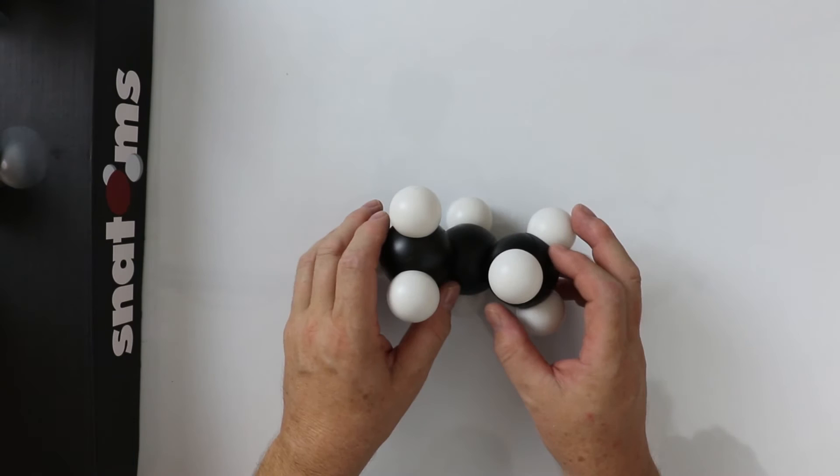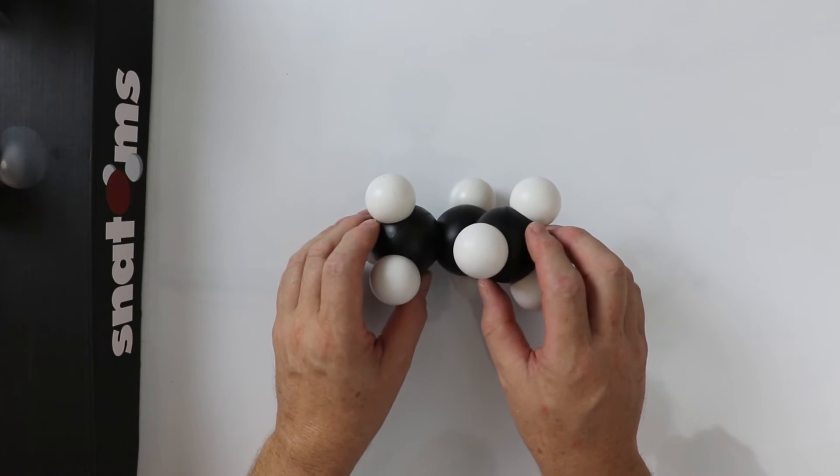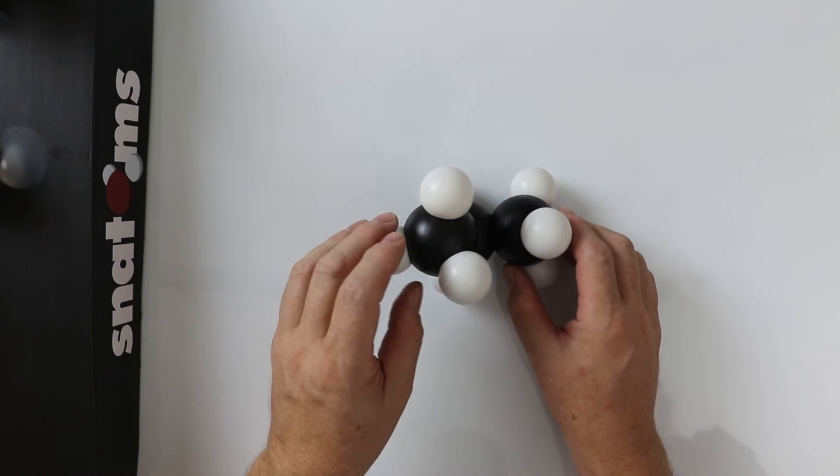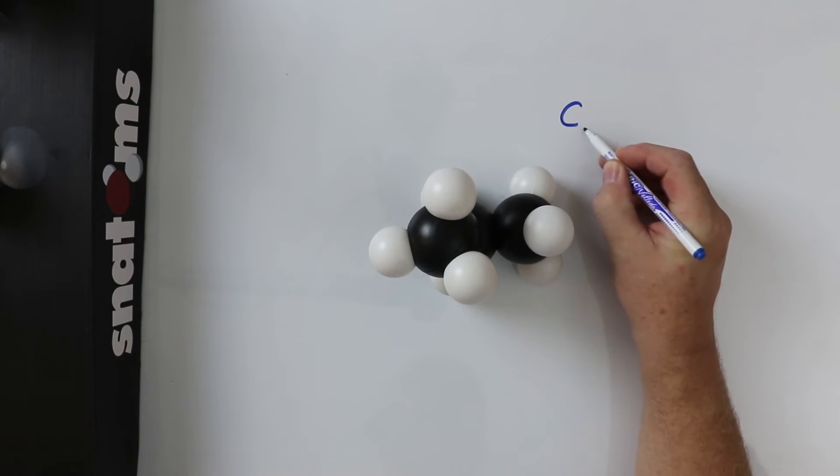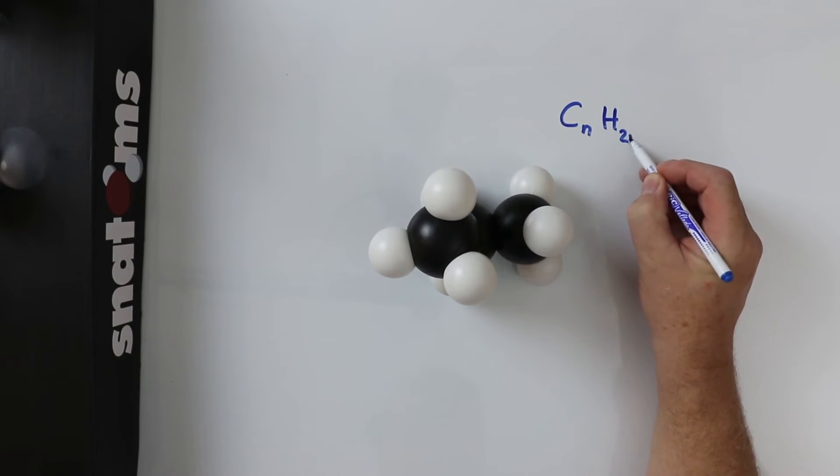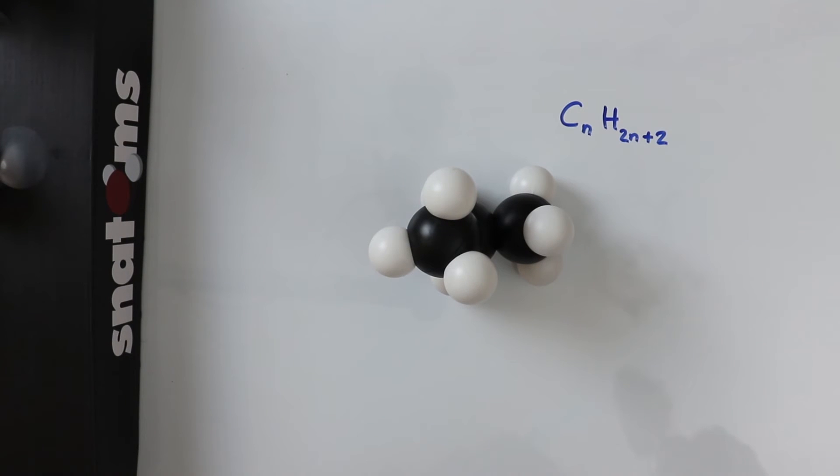This is propane, 'prop' from the German meaning tri or three, and 'ane' from the chain. We can continue to make the chains longer and longer by using the formula CnH2n+2, where n is a number, and we use this to work out how many atoms of each element are required.